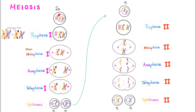Meiosis on the other hand has two rounds of division: round one and round two, meiosis one and meiosis two. Meiosis two looks very similar to mitosis with some tiny differences. However, meiosis one is very different from mitosis.